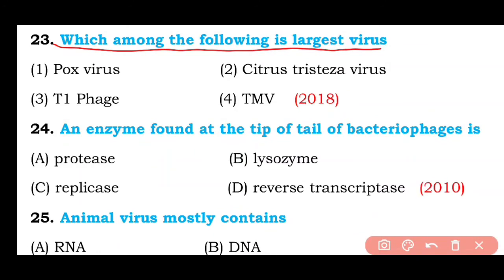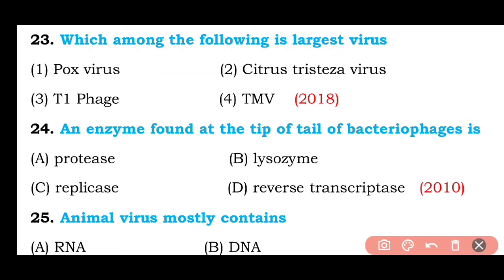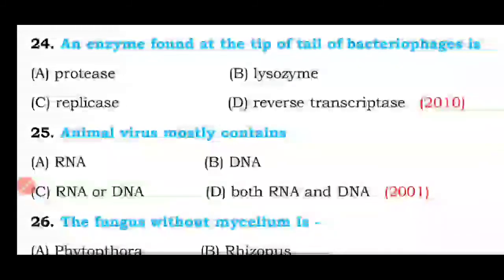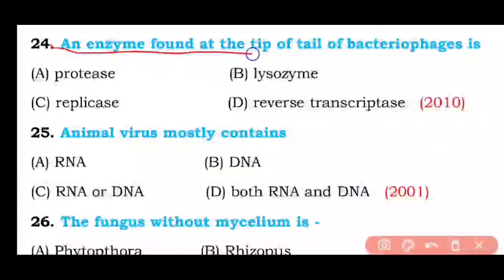Question number twenty-three: Which among the following is the largest — pox virus, Citrus tristeza virus, T4 phage virus, or TMV? The correct answer is option A — pox virus is the largest among the given options.